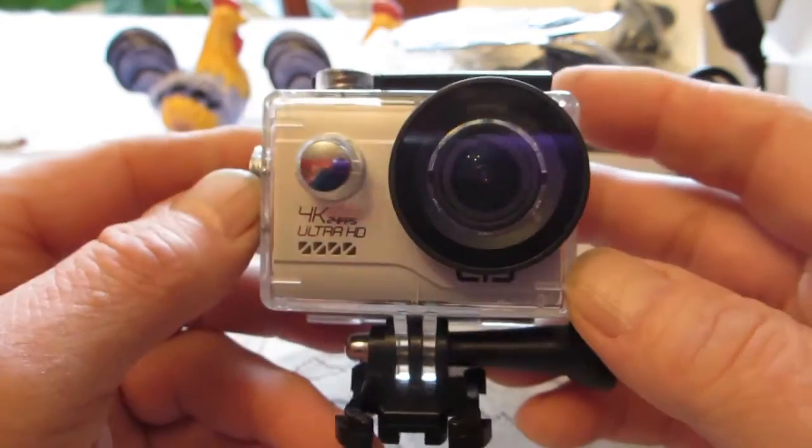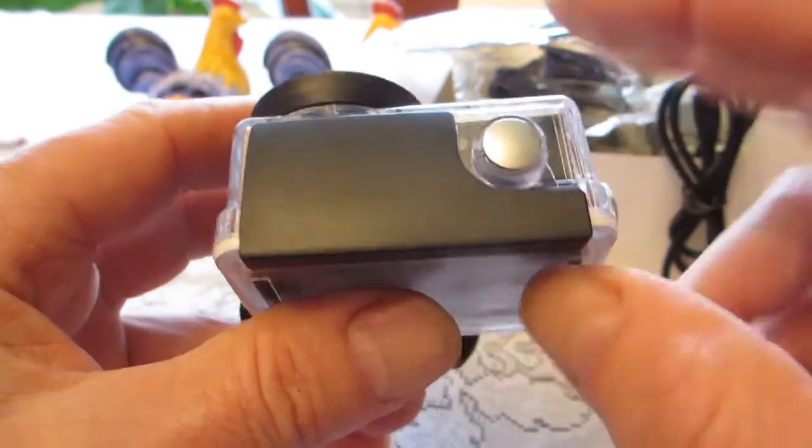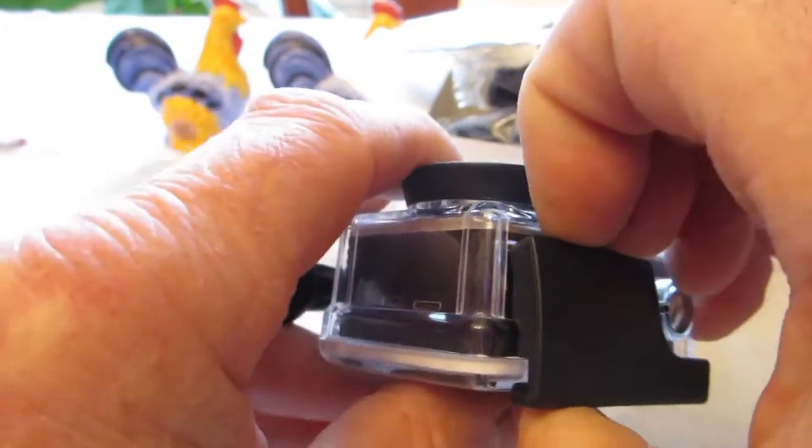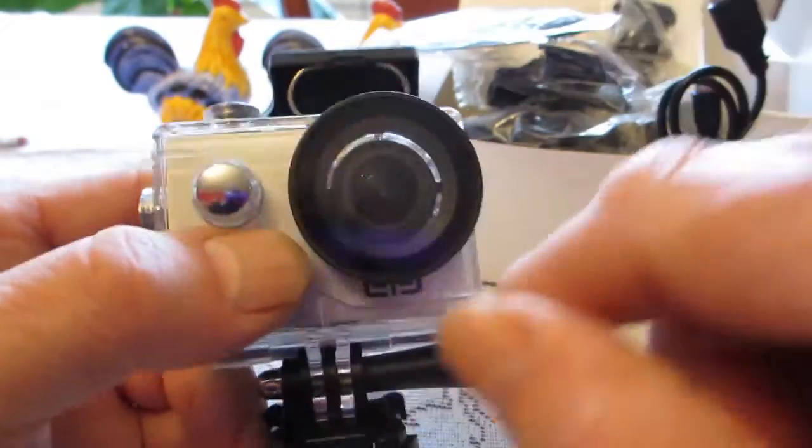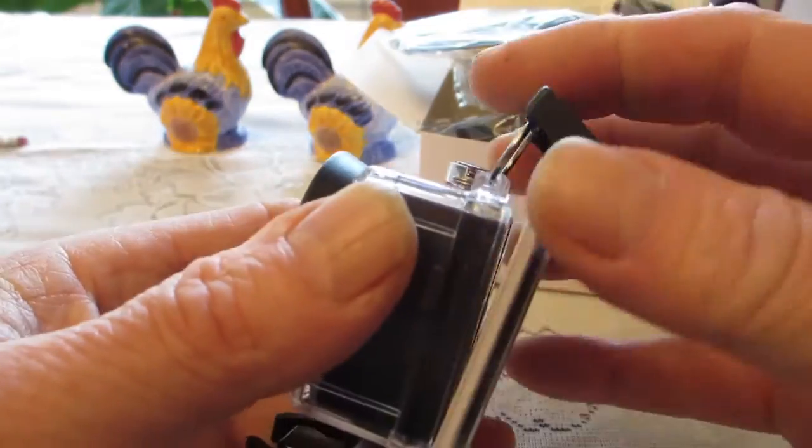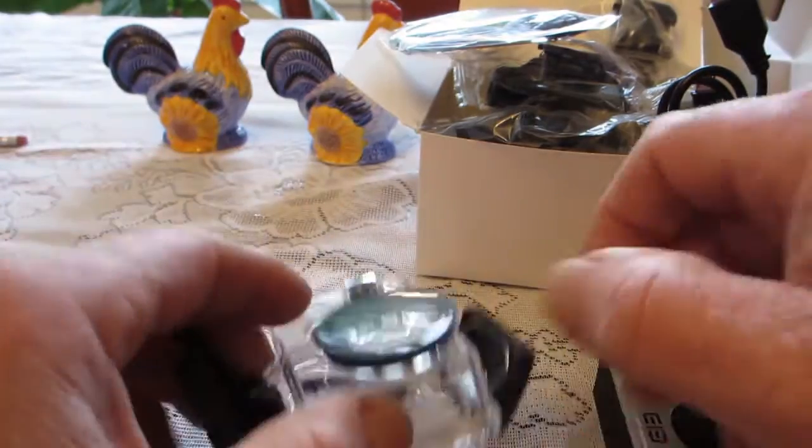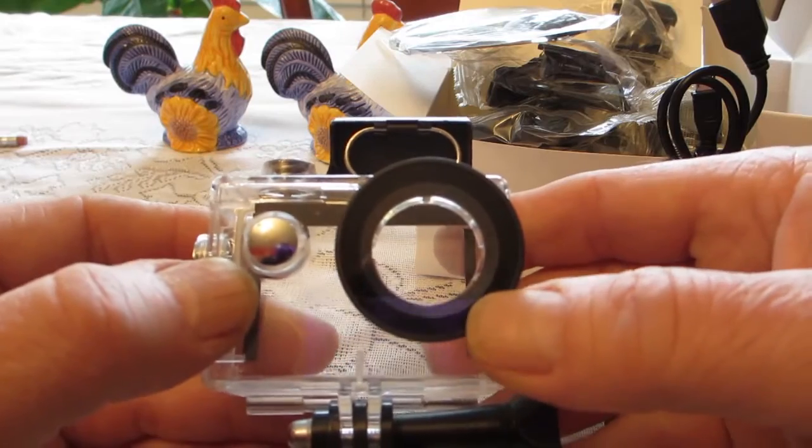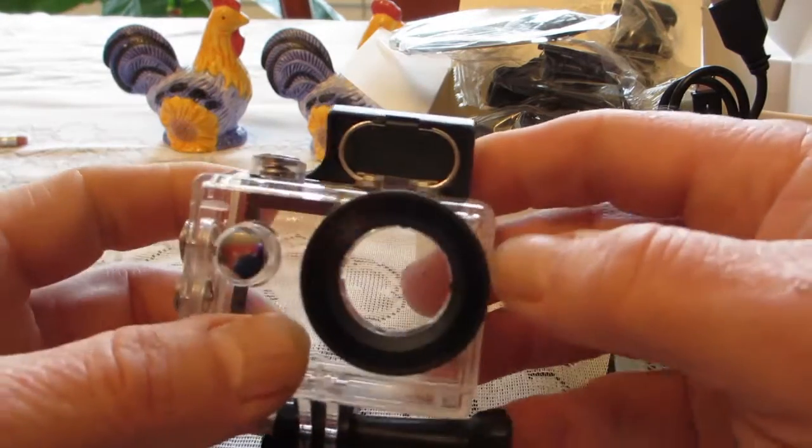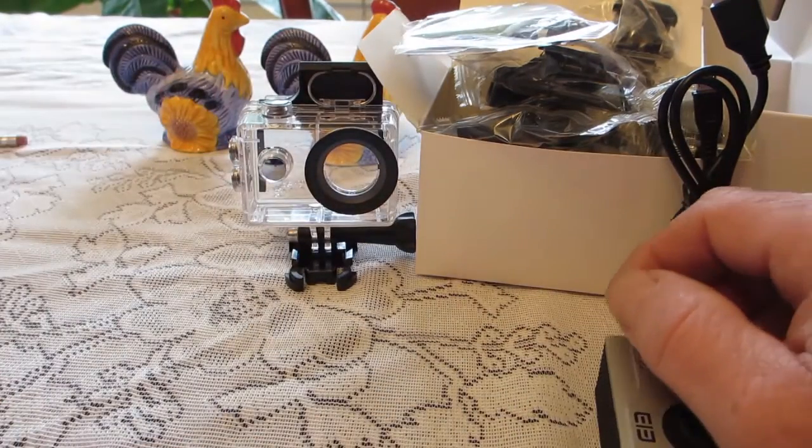So it comes nice and solidly packed in its own little waterproof case, a slightly different style. There's no release pin on there, you just put your fingers underneath I suppose. The front looks different too, it's just a different style case altogether from your regular action camera. It's rated for 30 meters. Am I going to test it out? No, because I'm not going to take it in the water.